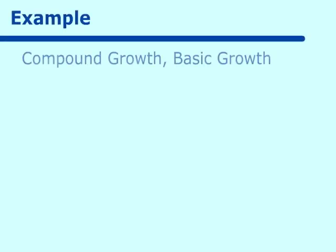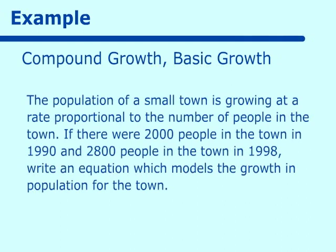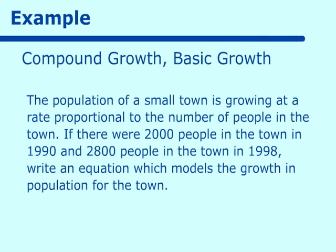Our first example is a basic one. The population of a small town is growing at a rate proportional to the number of people in the town. So we have some sort of change in q over change in t, and proportional to means equal to some constant times the number of people in the town, which we will call q.